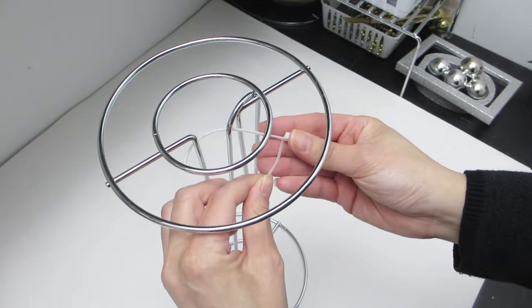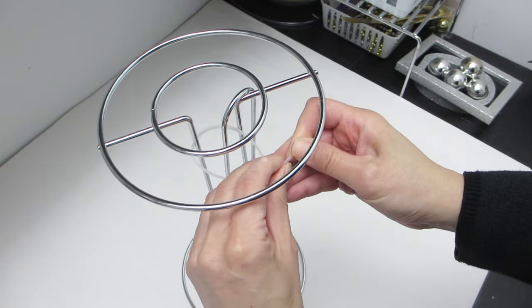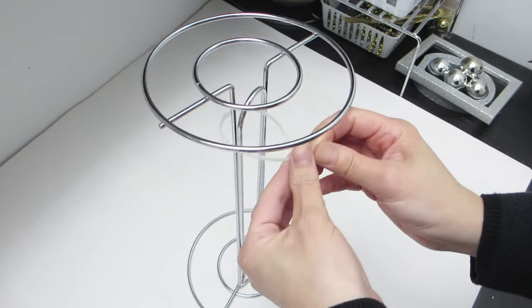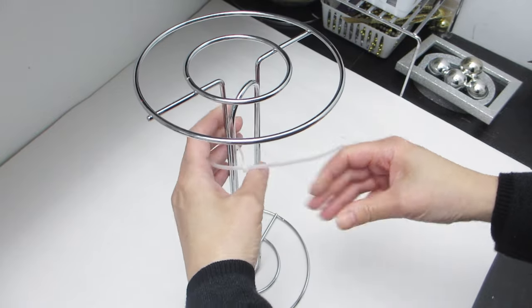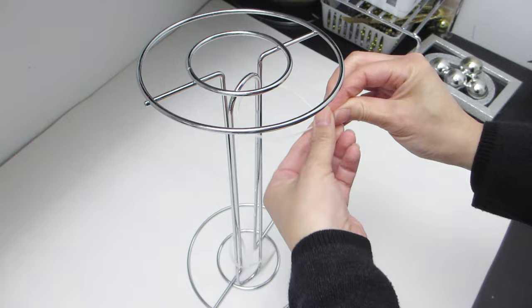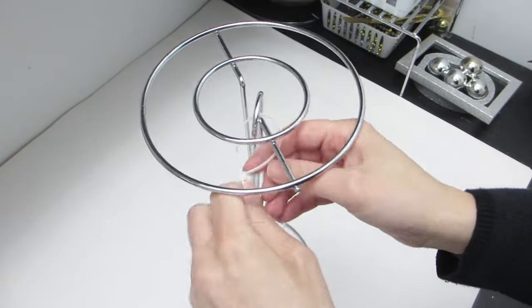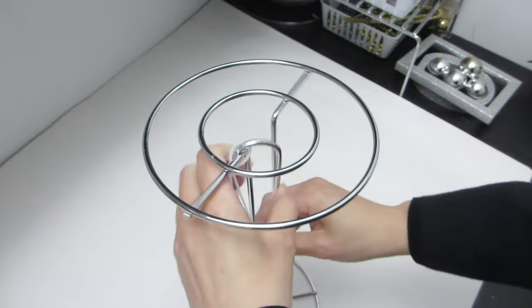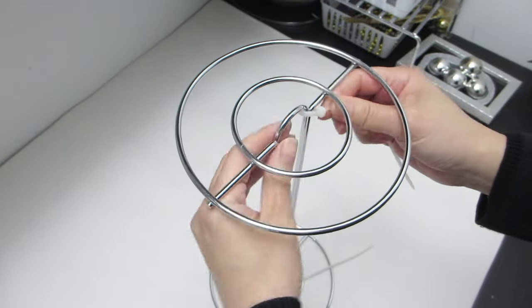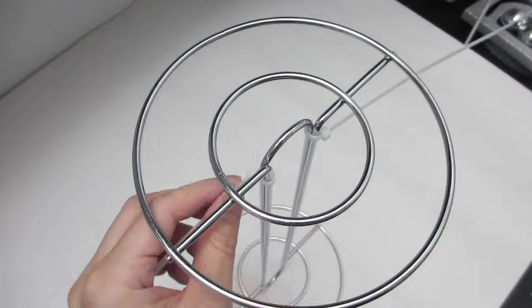For our first lamp, we'll need two of these chrome paper towel holders. The first thing we're going to do is place one upside down against the other one standing upright. Then we'll secure the two together using some nylon cables. I have chosen the white ones because they will be less visible. Once you have tightened them and you think they're secure enough, you can go ahead and clip off the excess ends.